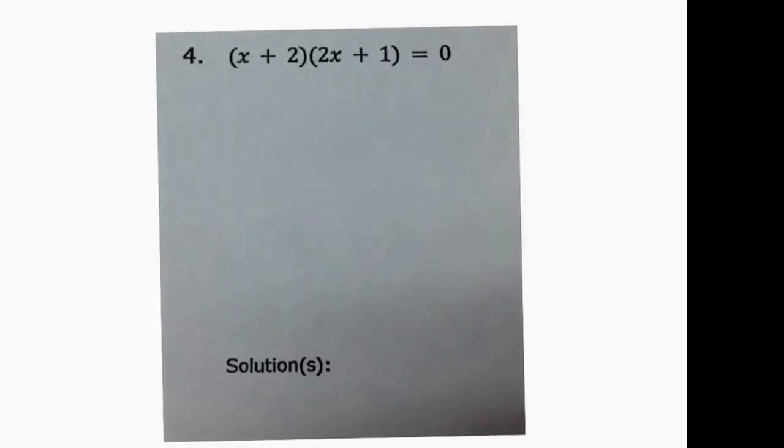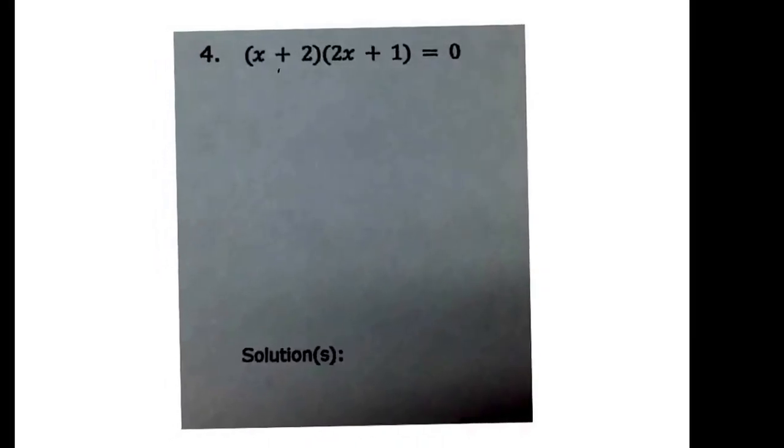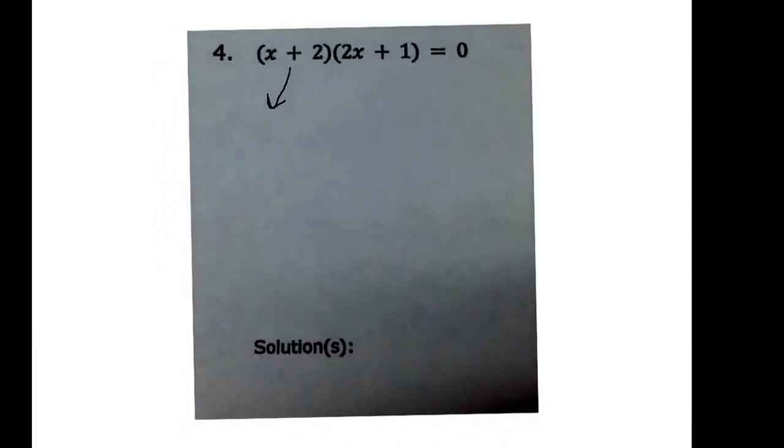This one wants to know the solutions. We learned that in class, this has an answer that's just the opposite of what you see there. So you see x + 2 so this is x = -2.